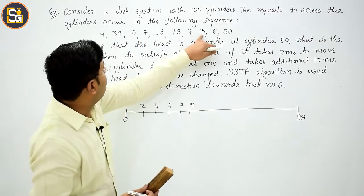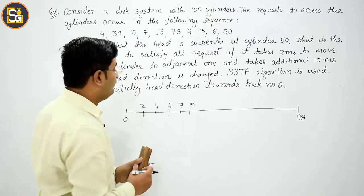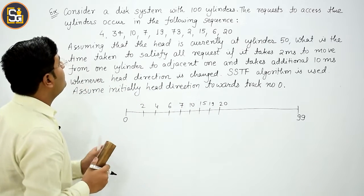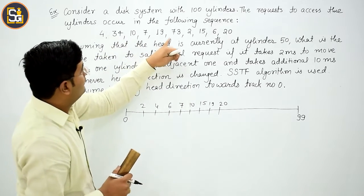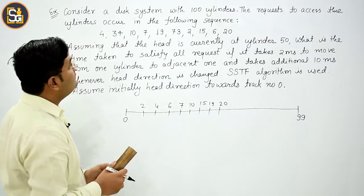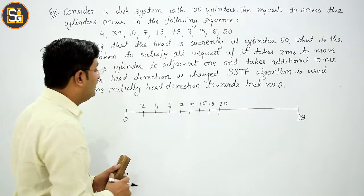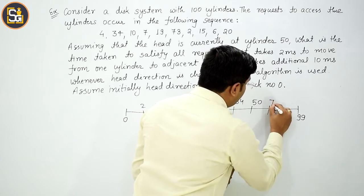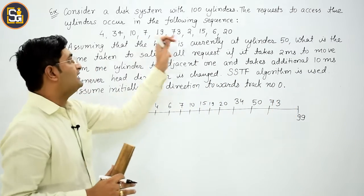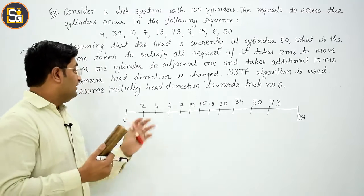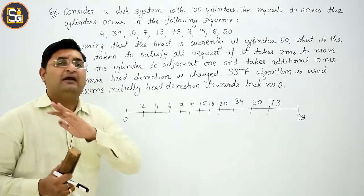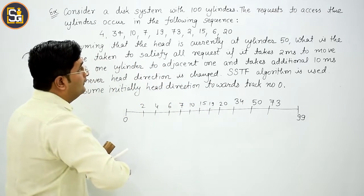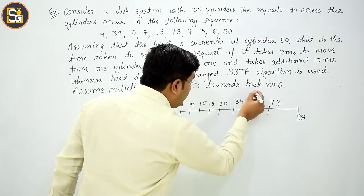Next 15, 19, 20. After 20 comes 34, then 73. So we have 3, 2, 4, 6, 7, 10, then 15, 19, 20, 34, and 73. Initially head is at 50, and we've arranged all of them. This way the chance of making mistakes is almost negligible.